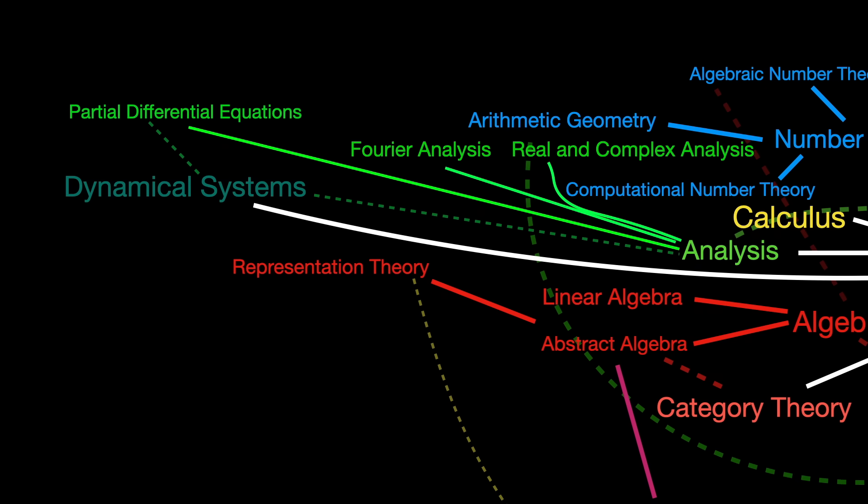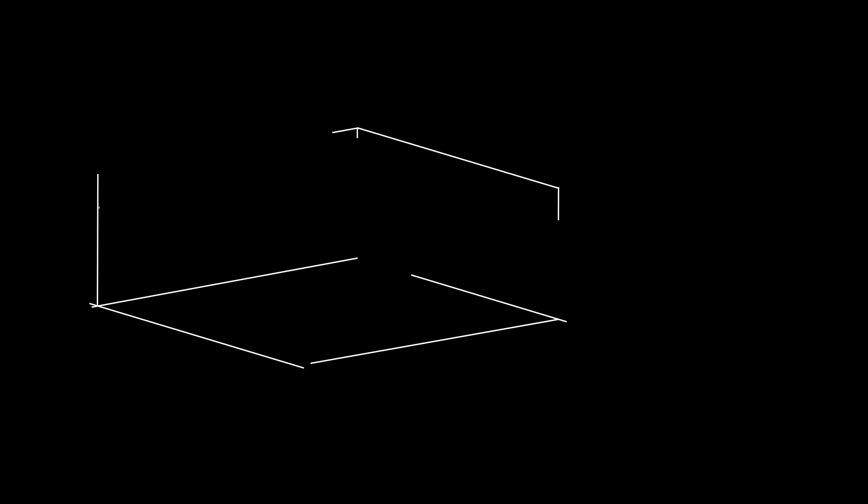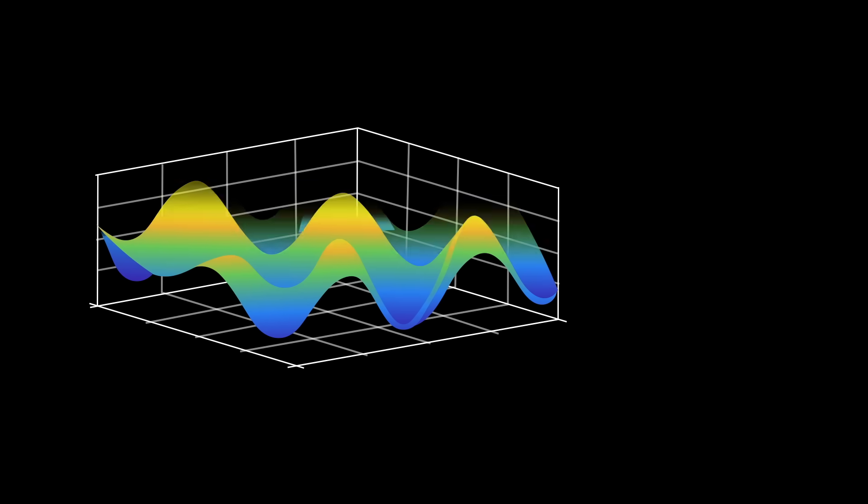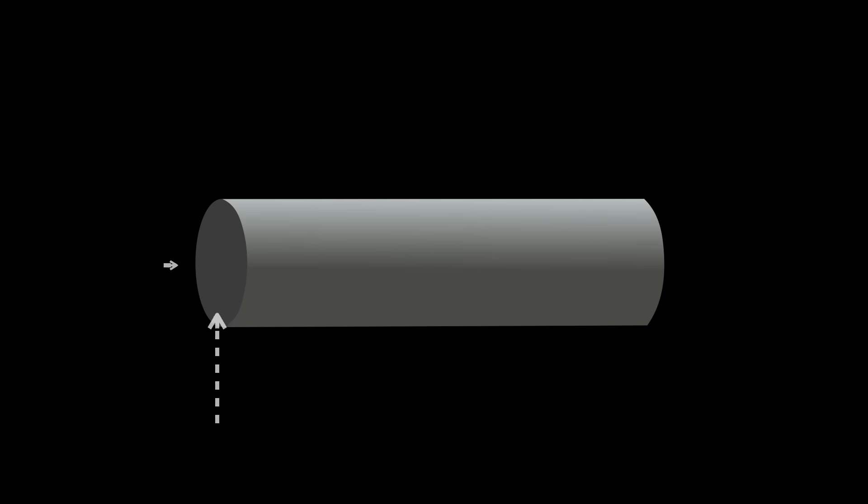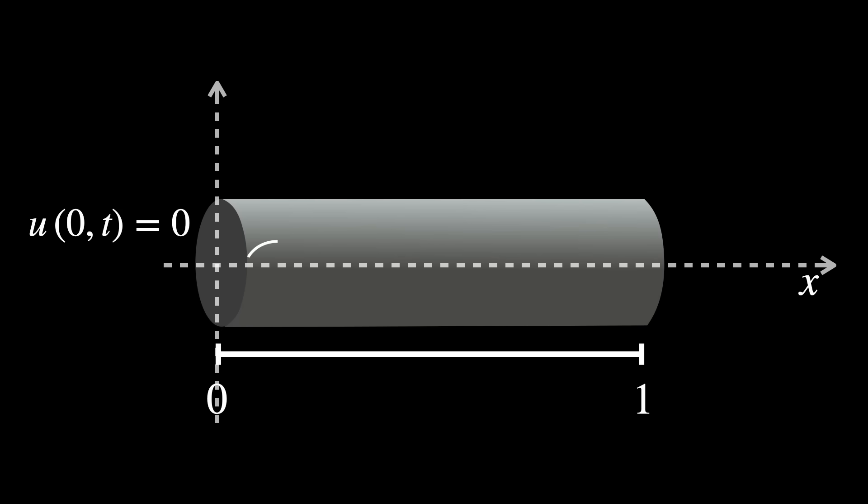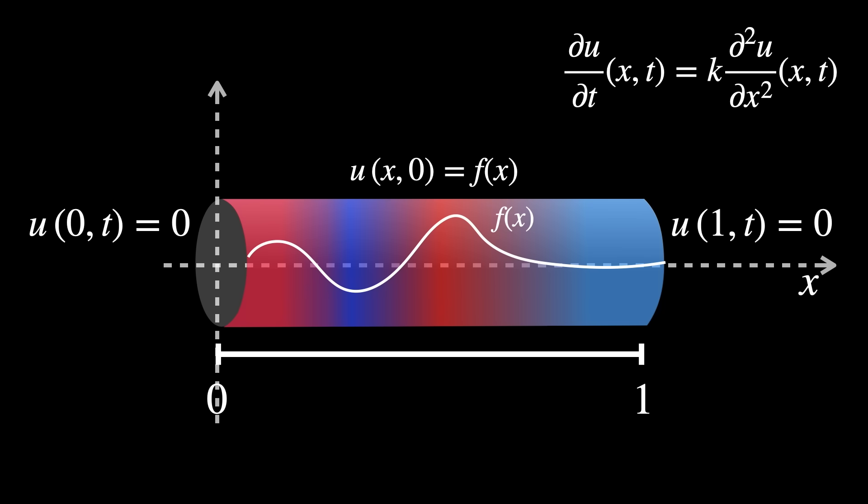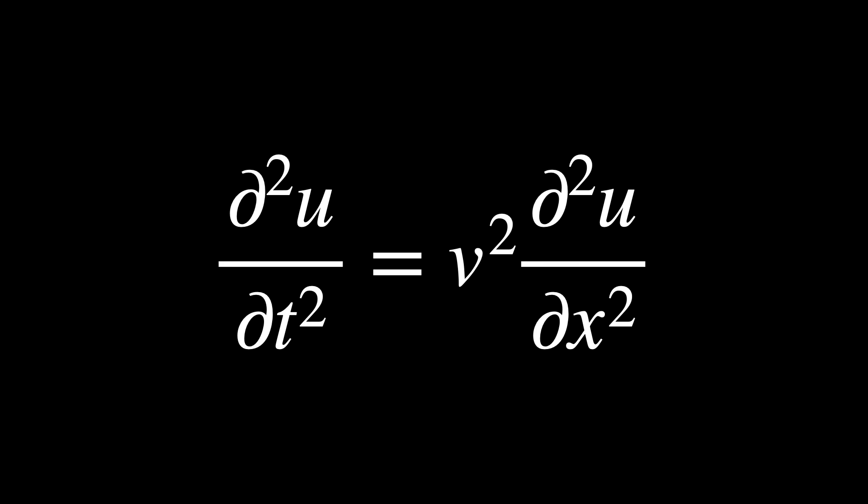Partial differential equations, or PDEs, distinguish themselves by the presence of partial derivatives. They indicate the rate of change of functions relative to multiple independent variables. This class includes a really wide spectrum of equations, each of which models completely different scenarios. For example, the heat equation models the distribution of flow of heat in a medium over time, while the wave equation describes the propagation of waves, like sound or light waves through space.